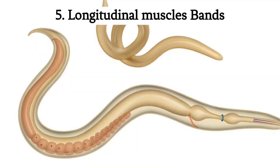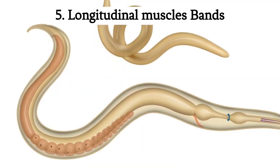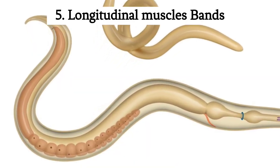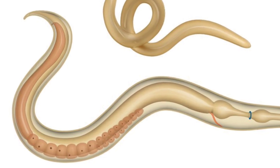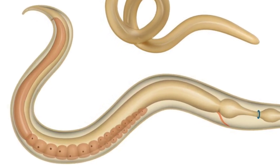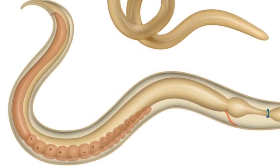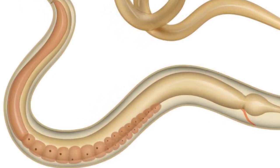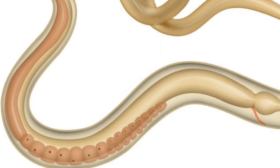5. Longitudinal muscle bands. Nematodes have longitudinal muscle bands that run the length of their bodies, providing strength for movement through a contracting and relaxing motion.